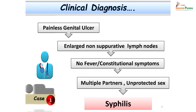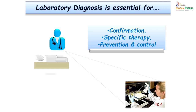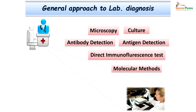In this case we made the diagnosis of syphilis based on clinical judgment. Ulcers were painless, enlarged local lymph nodes were present which were again painless, there was no fever or constitutional symptoms, and there was a history of unprotected sex. Once the clinical diagnosis is made, it is important to confirm it so that we can initiate specific therapy to prevent debilitating complications. Going to lab diagnosis, there are various modalities including microscopy, direct examination and stain preparation, culture, antigen or antibody detection, direct immunofluorescence test, and molecular methods.